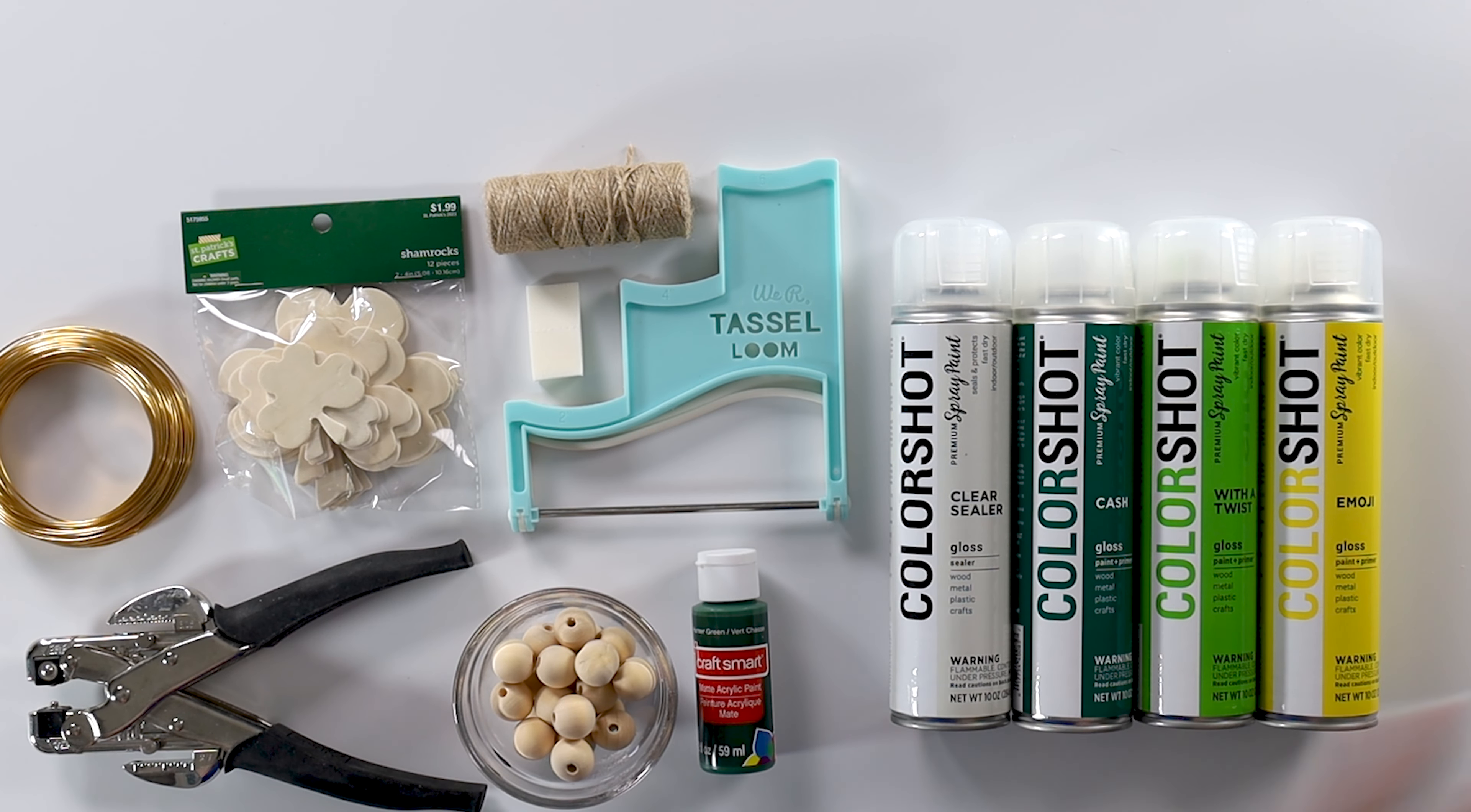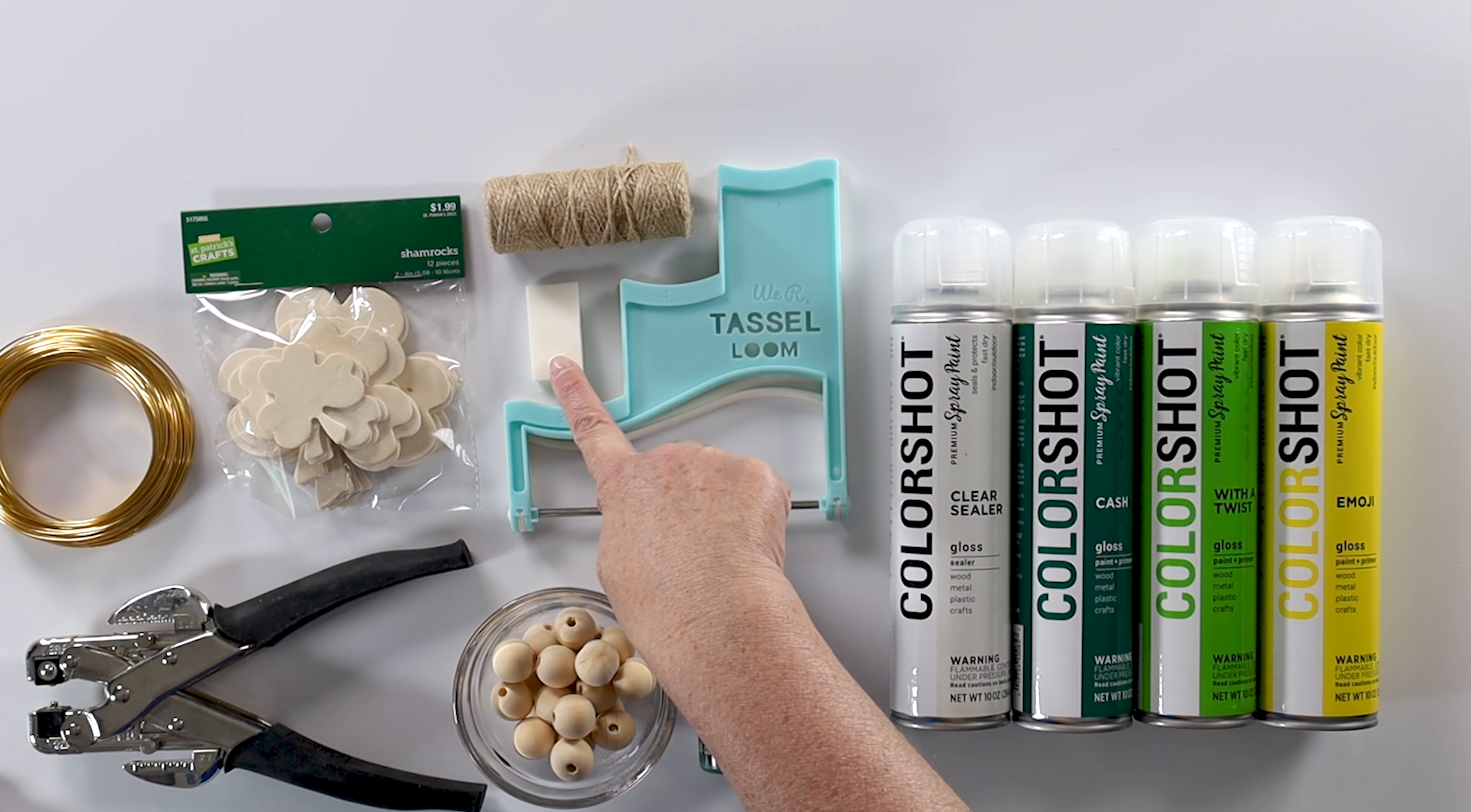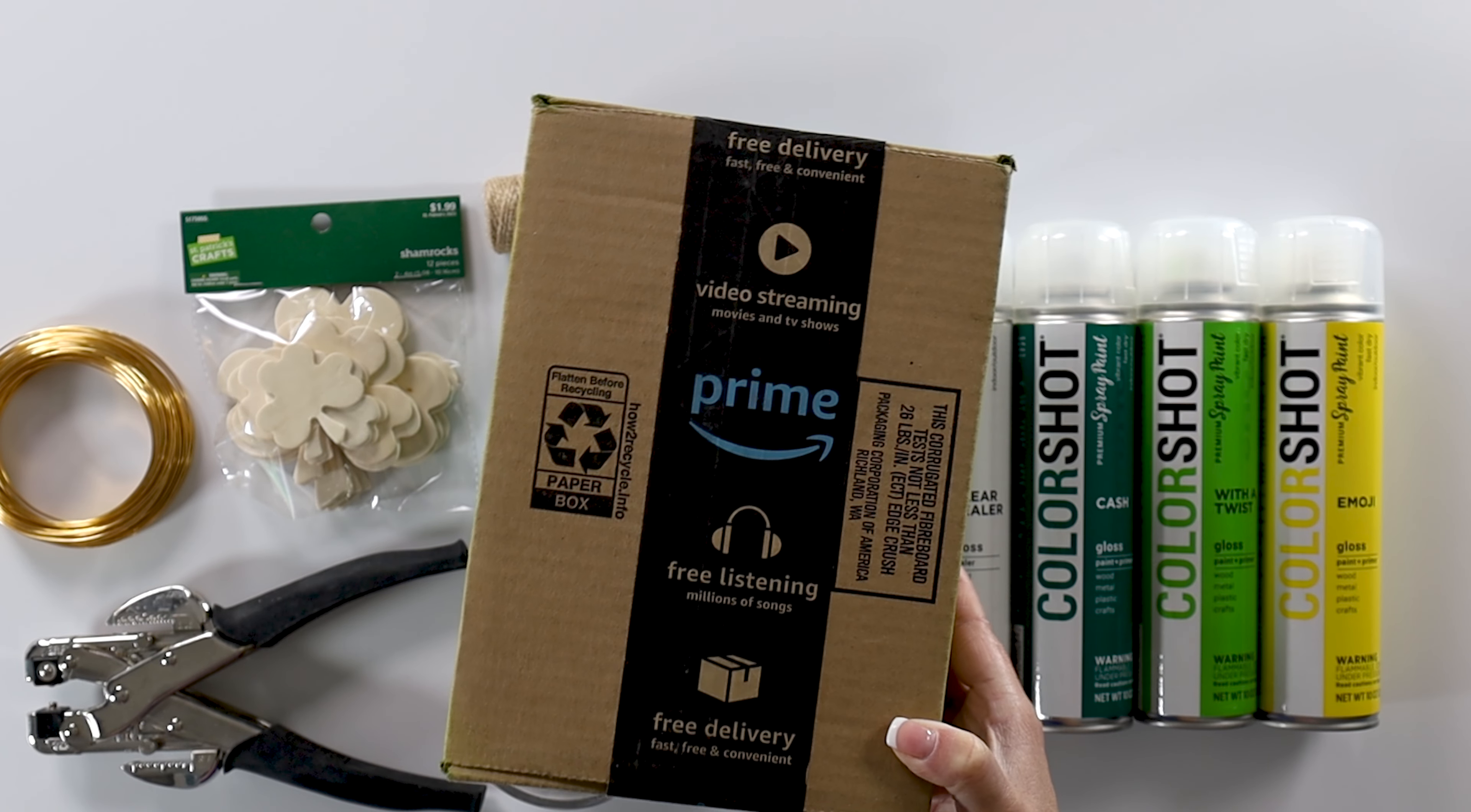I've got the supplies that we're going to be using laid out on my table here. We've got three colors of spray paint: a yellow, a light green, and a dark green, and then this is a clear sealer, some hunter green acrylic paint, some unfinished wooden beads, our tassel loom, and some twine, a makeup sponge, and then I'm only going to be using one of these shamrocks from this package, our crop-a-dial, some wire, and then I'm also going to be using a small box.